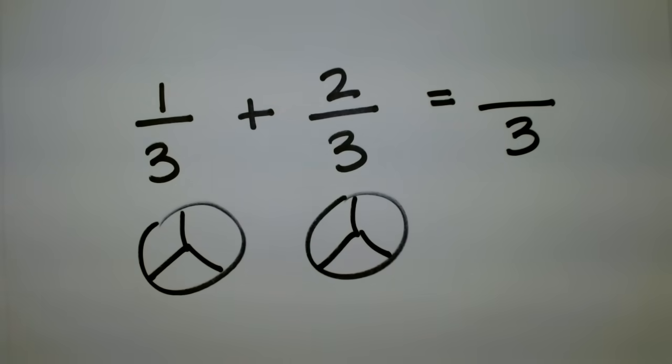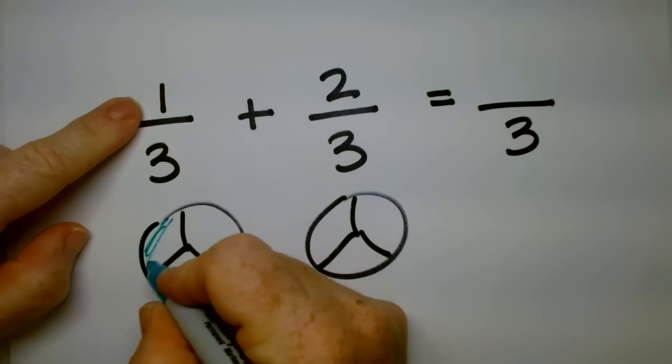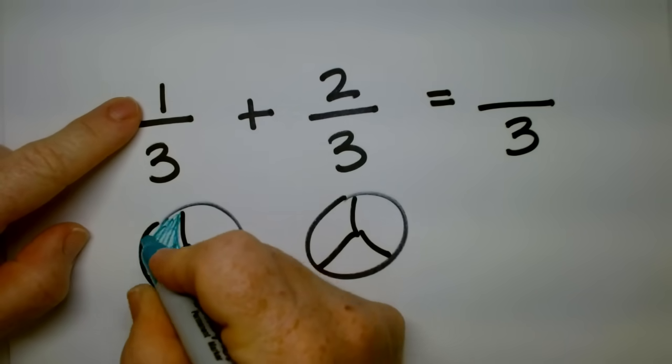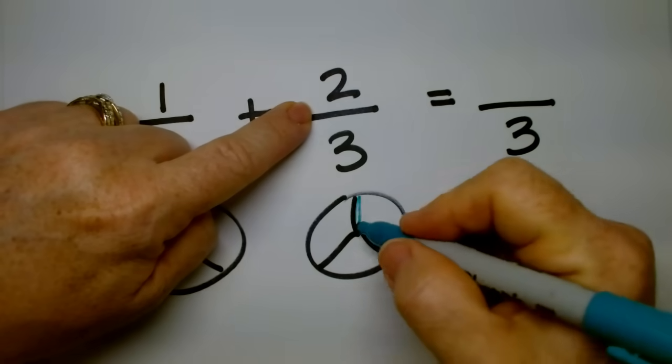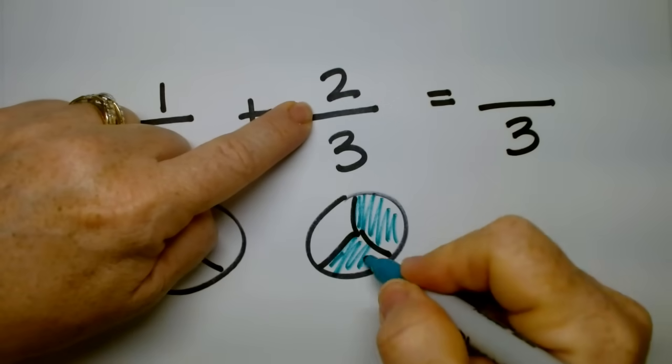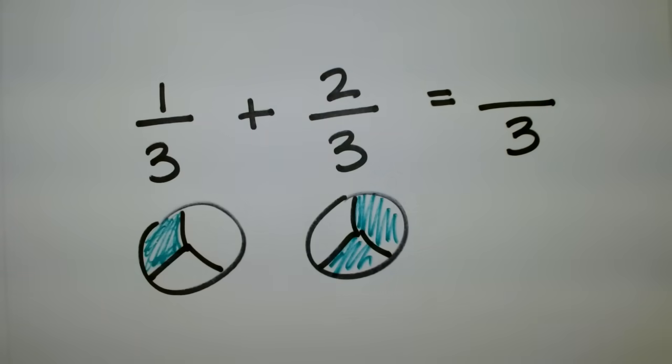For this one, one-third, the three talks about how many divisions you have. The one is how many you're actually talking about. So this is a pizza sliced into three pieces, but you only took one. Your friend took two.